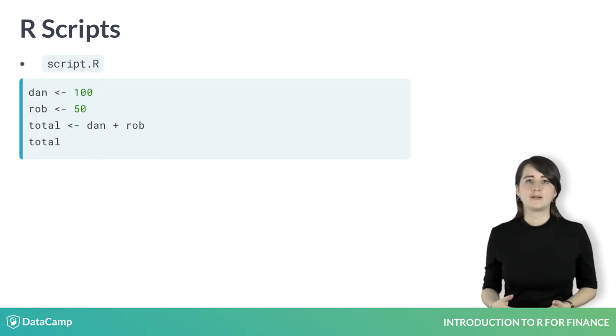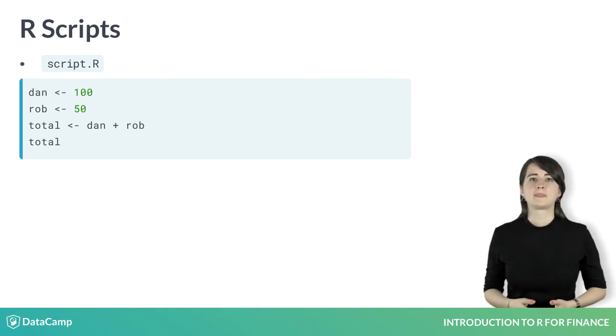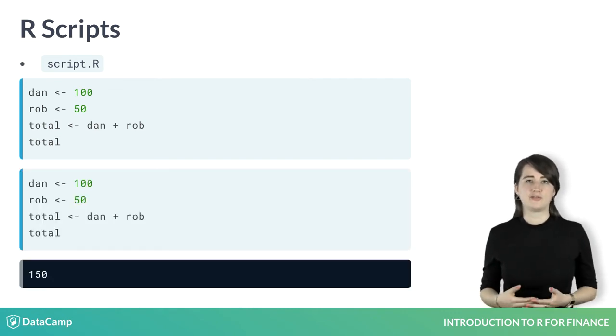An R script is simply a text file that holds lines of code, and that can be saved and run in succession whenever you want. Let's write the code that has been run so far in an R script. Now you can run this code whenever you want.